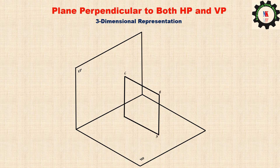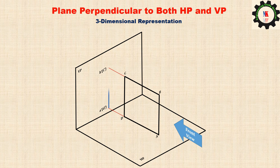Now represent the corners with ABCD. To obtain the front view, project each and every corner onto the vertical plane. Join the corners to obtain the front view.